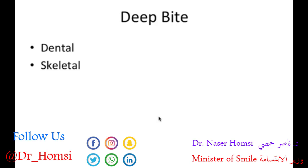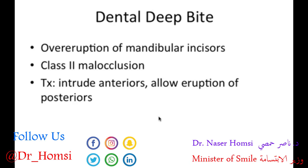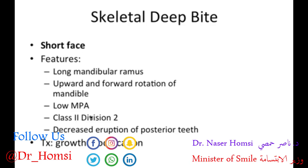Now at the other end of the spectrum is deep bite, which also has dental and skeletal variations. For the dental type — a class II malocclusion — we have over-eruption of the mandibular incisors, which can pierce into the palatal mucosa. Treatment involves intruding the anteriors and allowing eruption of the posteriors to open the bite. Remember: eruption of the posteriors is linked to opening the bite.